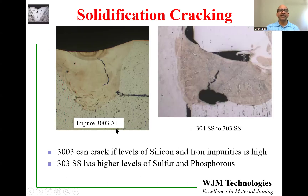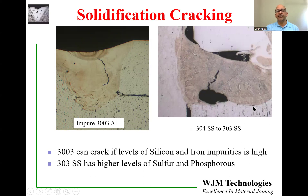Here are cross-sections of typical solidification cracks. On the left is an image of a crack in aluminum 3003 with internal cracks. On the right is a cross-section of a weld between 304 stainless steel — a clean version — and 303, which is the machinable grade with a lot of sulfur. That sulfur segregates to the grain boundaries and results in solidification cracking.